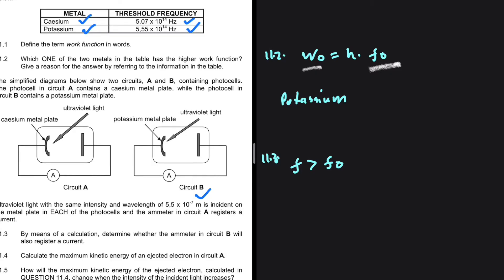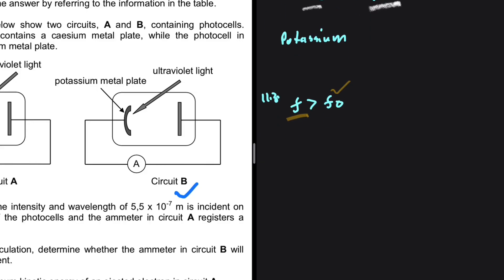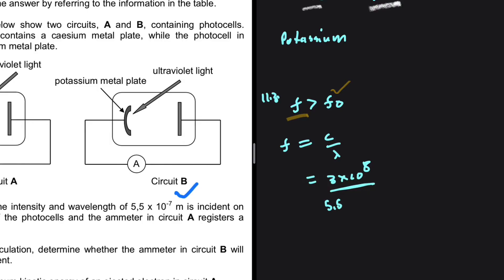We have the threshold frequency for potassium, so we just need to calculate the frequency of the incident light and see if it is greater than the threshold frequency. The frequency equals the speed of light divided by the wavelength: f = (3 × 10⁸) / (5.5 × 10⁻⁷ m), which gives 5.45 × 10¹⁴ Hz.